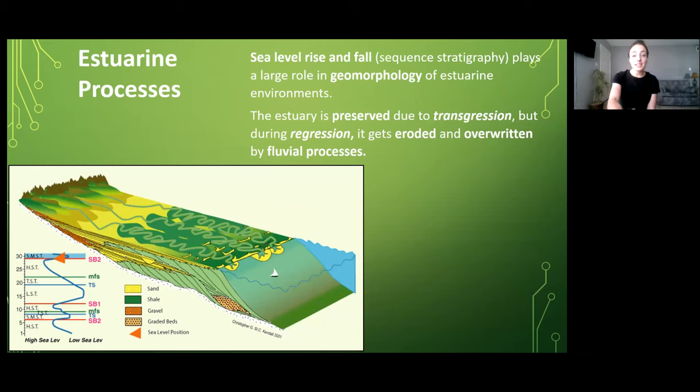For this video let's move on to how sea level affects estuarine deposition. Sea level rise and fall can play a large role in determining the geomorphology of estuarine systems. The estuary is preserved due to transgression but during regression gets eroded because it is overwritten by fluvial processes. What we can see is during a transgression, the shoreline moves further inland as opposed to a regression when the shoreline moves further basinward. When the sea level rises we get this estuary environment to form if all of the marine, fluvial, and tidal influences are balanced.